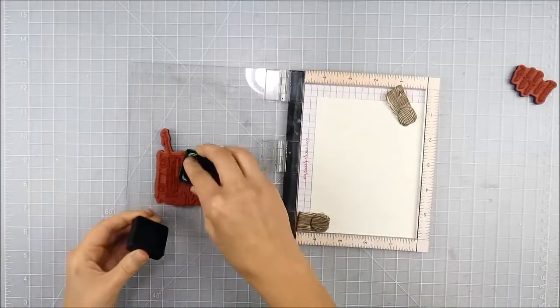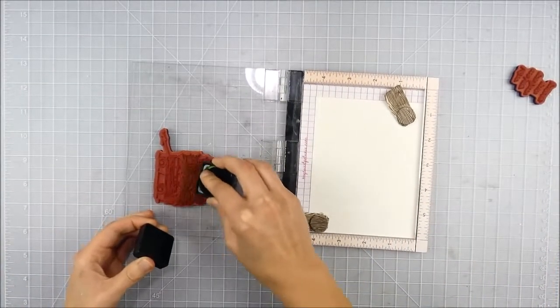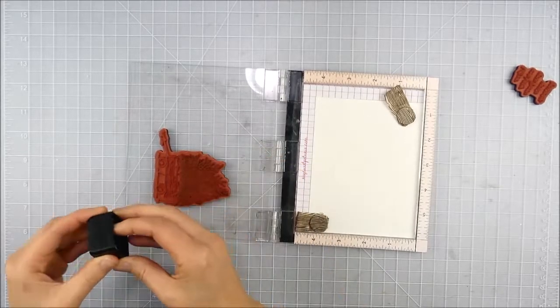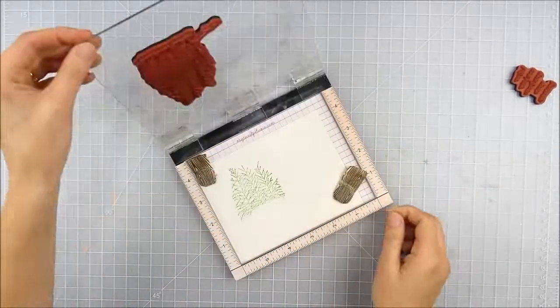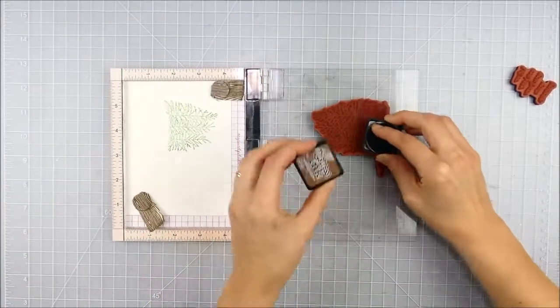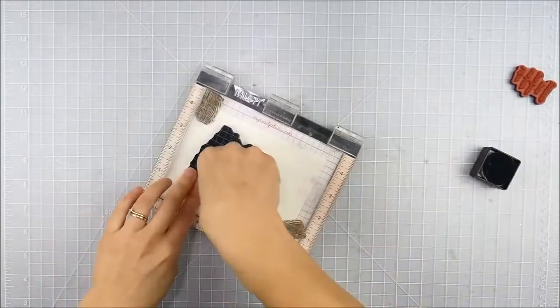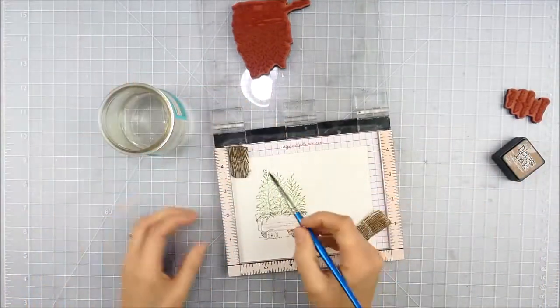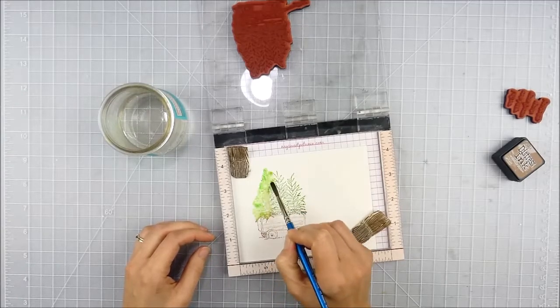I'm using my stamping platform for perfect alignment here. This is my mini MISTI and I'm starting off with distress ink in mowed lawn. The small cubes work best for this. You could also use a water-based watercolor marker or any watercolor friendly ink. I started off by just inking up the top part there with the trees in that mowed lawn.